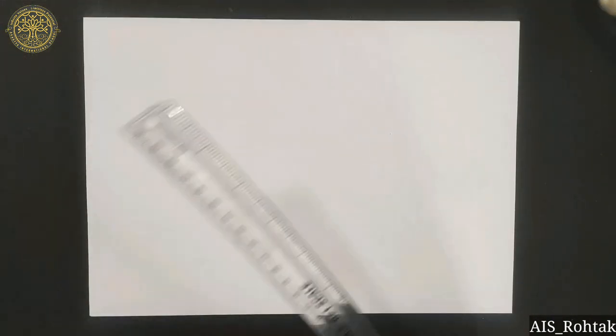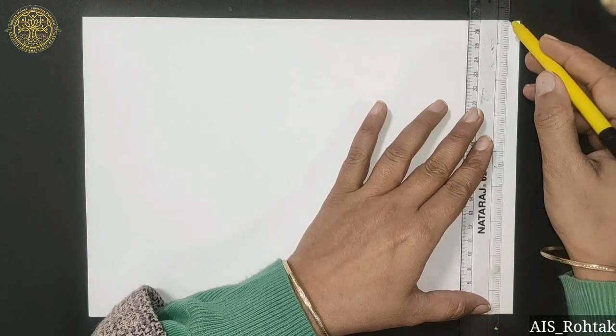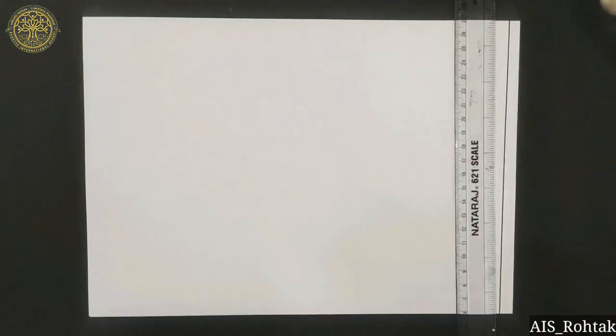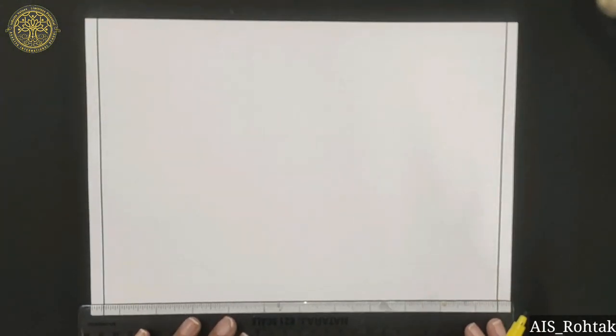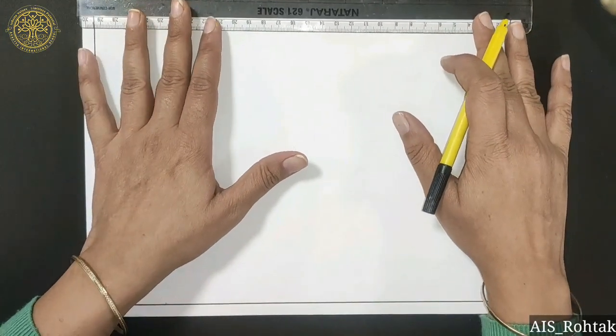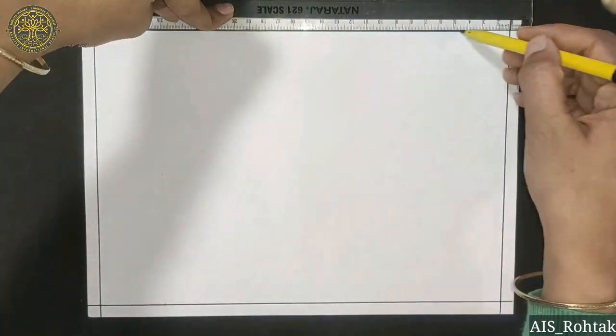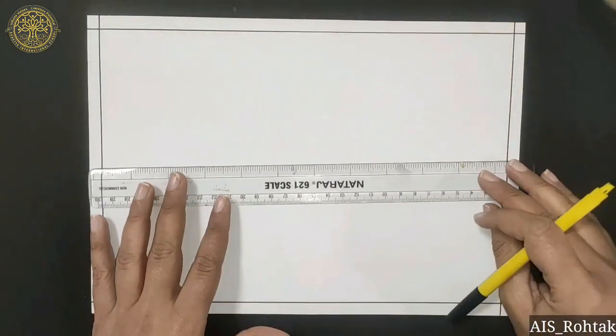Hello kids, today we are going to learn drawing of simple machines. Let's start. Firstly we have to draw a border on our sheet, then we divide our sheet into six equal parts.